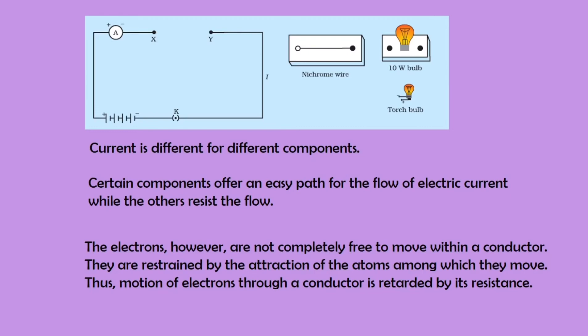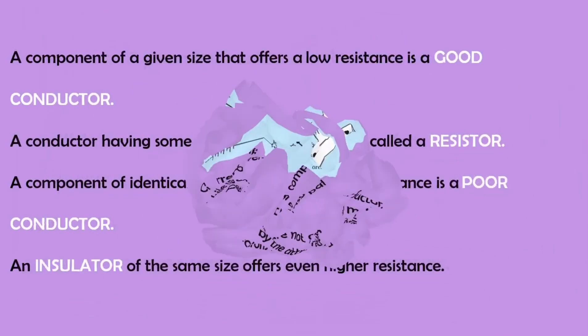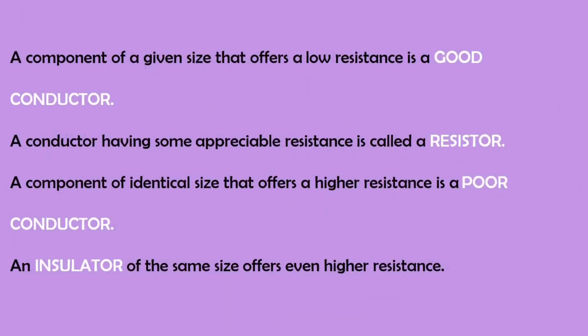The electrons, however, are not completely free to move within a conductor. They are actually restrained by the attraction of some atoms among which they move. So the motion of electrons through a conductor is retarded by its resistance and that type of resistance is called internal resistance. So for each and every material, the internal resistance varies. With this, we can differentiate whether the given material is a conductor or an insulator.